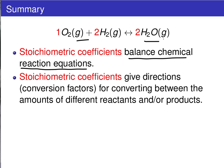We then saw how these stoichiometric coefficients effectively give us directions, or conversion factors, for converting between the amounts of different reactants and/or products.